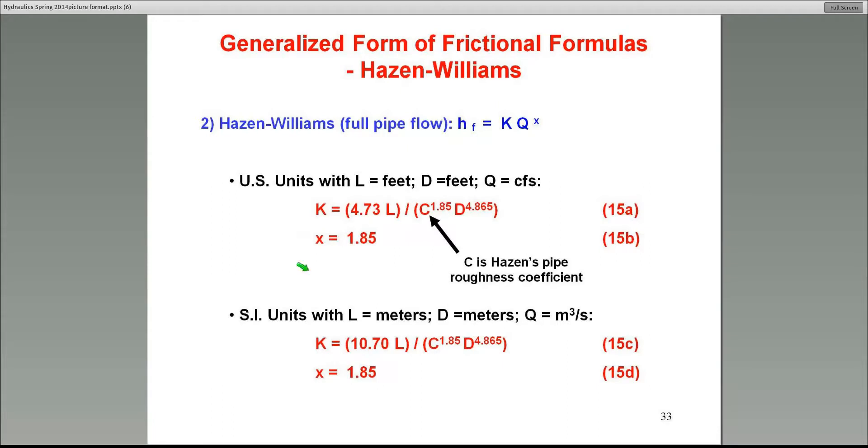In SI units, it's the same equation except it's 10.7L. L is in meters, not in kilometers. C is, of course, the same roughness coefficient as before. And D is the pipe diameter. Now, let me show you a table.